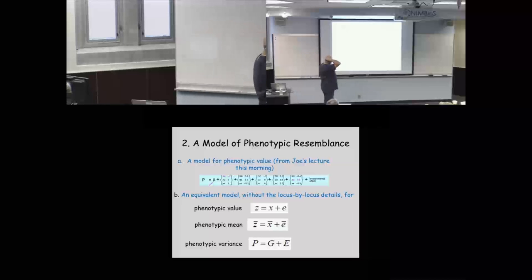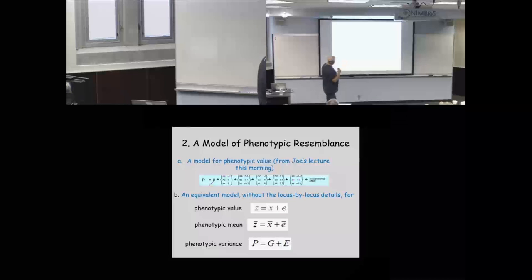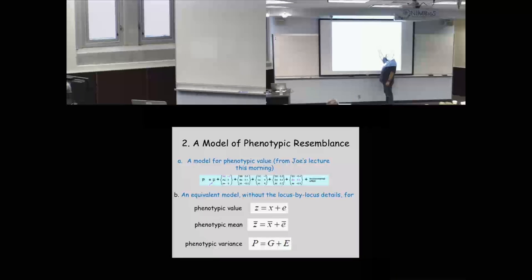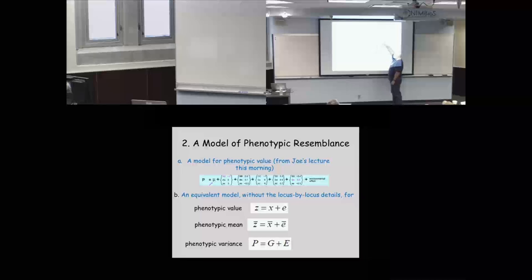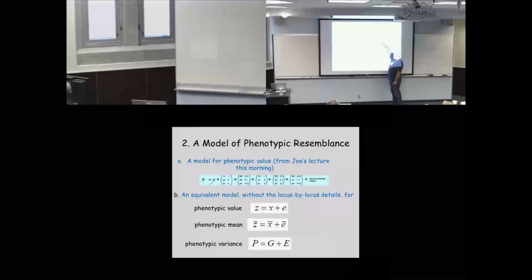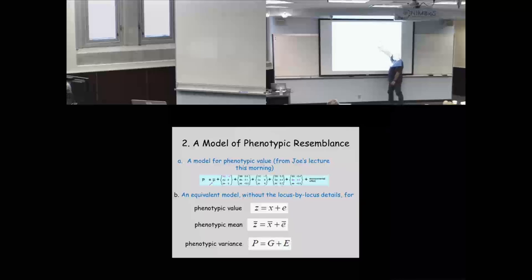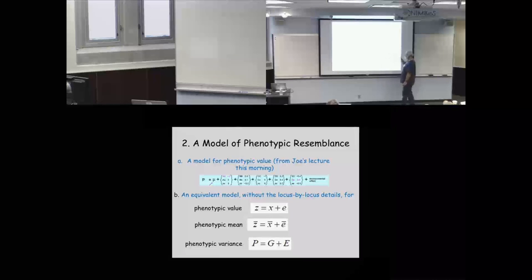Here's the model in new notation. This is the pentalocus version with five loci and two alleles at each, but we can have as many loci and alleles as we want. Each locus has dominance, but there's no epistasis in this version. From this genotypic model, we tease out the additive genetic effects at each locus — the sum of alphas — representing the linear combination of allelic effects that constitutes the additive contribution at that locus to phenotypic value.